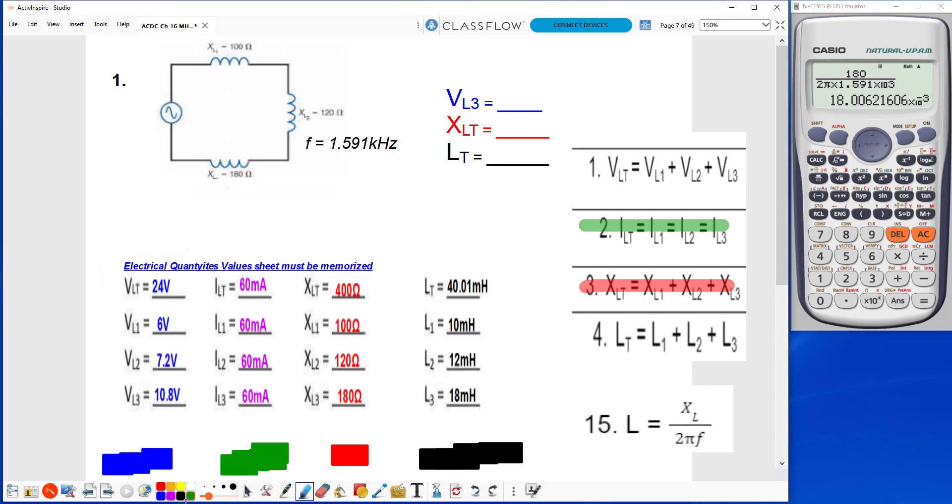And as you see here, they should add up. 18 plus 12 plus 10 should add up to 40.